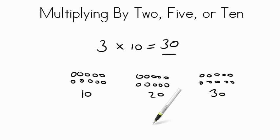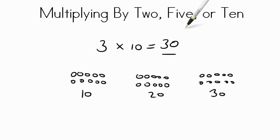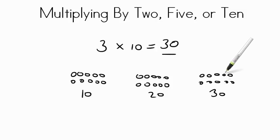So skip counting helps you with your multiplication, and knowing your 2's, 5's, or 10's will really help you with that. Let's take a look at a couple examples and see if you can figure them out.